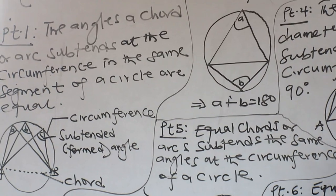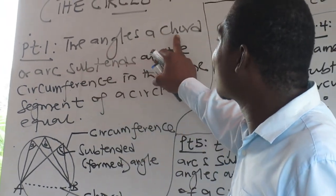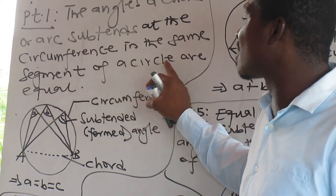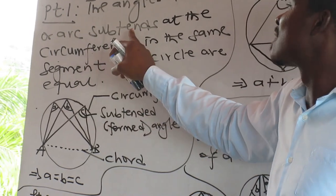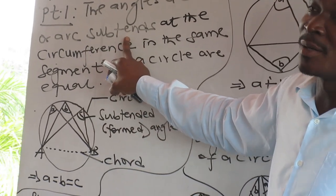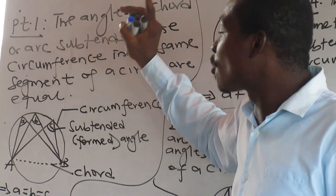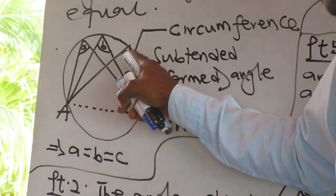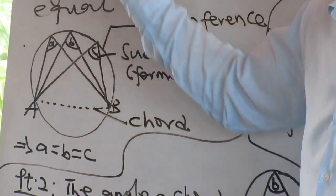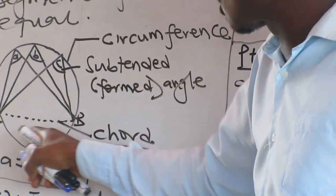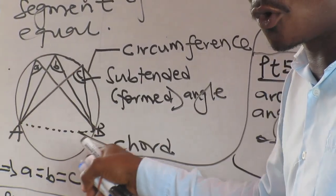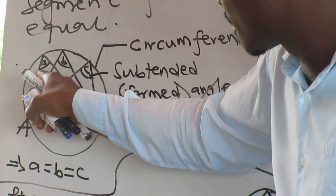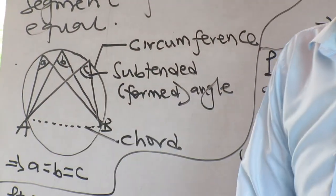Property one: the angles a chord subtends in the same segment of a circle are equal. 'Subtend' means to form. The angle formed at the round part — the segment — of a circle are equal. So if this chord forms an angle here, here, here — they are all equal, say 30, 30, 30.